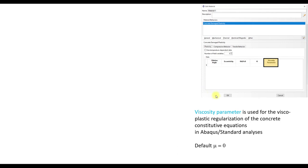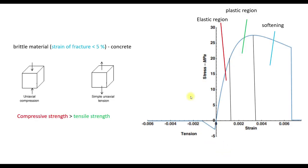Next we have the viscosity parameter. It's basically used for the material equations in Abaqus standard and the default value is 0.